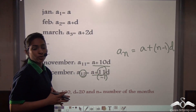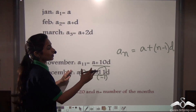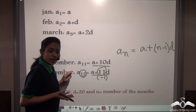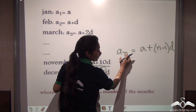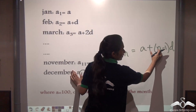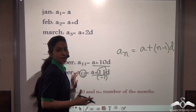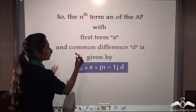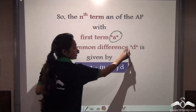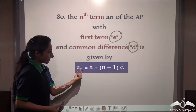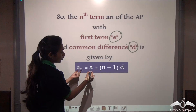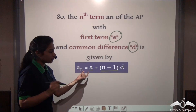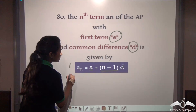So whenever we have to find out the Nth term, we use the formula A plus N minus one into D. In this way, you do not need to calculate term by term. If you want to find out how much money you will have in the twenty-fourth month, just put twenty-four here, write down the first term, write down twenty-four minus one, and write down the common difference and you will get the answer. The Nth term of an AP series with first term A and common difference D is AN = A + (N−1)D.